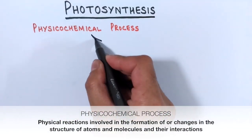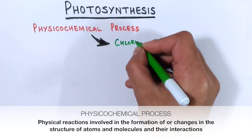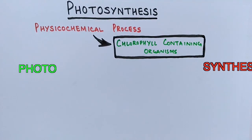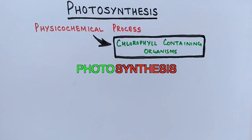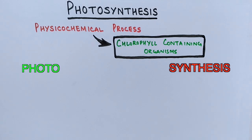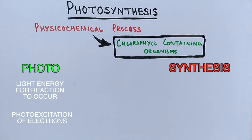Photosynthesis is a physico-chemical process that occurs in chlorophyll-containing organisms. Breaking the term apart, we get 'photo' and 'synthesis.' The photo term relates to light — organisms use the energy of photons to drive the synthesis of organic compounds like carbohydrates.